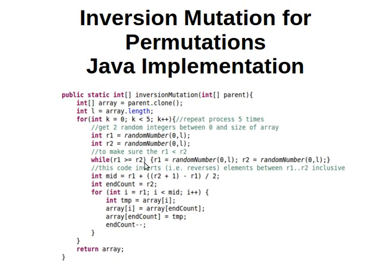Take a second look at the code and notice that we actually repeat it 5 times. It's very important to understand the idea of finding the middle point and then swapping the elements from the right and the left of that point. Thanks for watching. In the next video, we'll have a look at our final mutation method, and after that we'll speak more about the problem we're going to solve using genetic algorithms. See you next time.